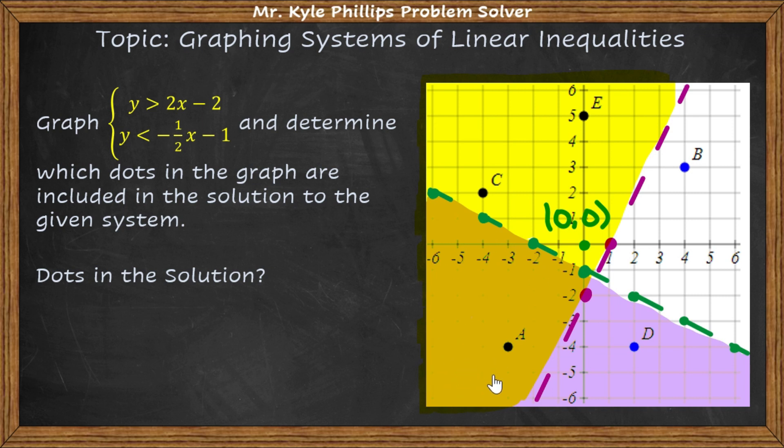And now my overlapping region represents the solutions to the systems of inequalities. So they want to know which dots are in the solution. And our only dot is A. So here we're just going to say A.